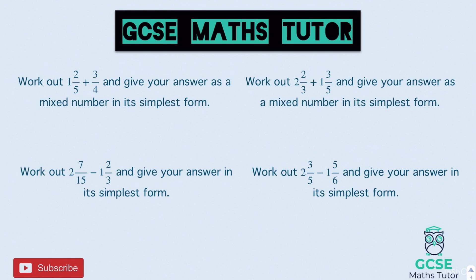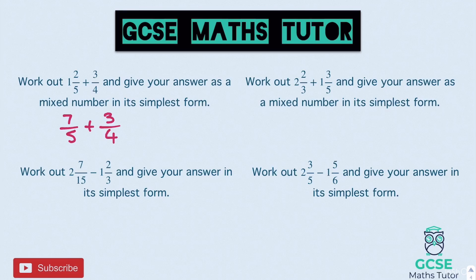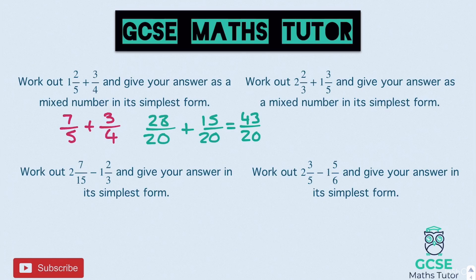Let's go over the answers. The first one — one and two fifths add three quarters. Making it top-heavy: seven fifths, and we add three quarters. Common denominator is 20. Left fraction: seven times four is 28 over 20. Right fraction: three times five is 15 over 20. Adding those together: 28 plus 15 is 43 over 20. Writing that as a mixed number: 20 goes into 43 twice with a remainder of three — so the answer is two and three twentieths.